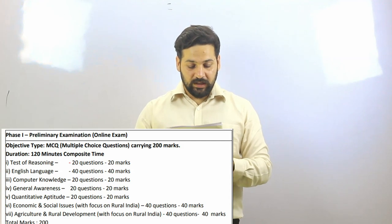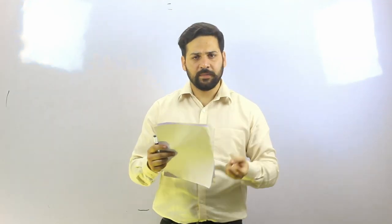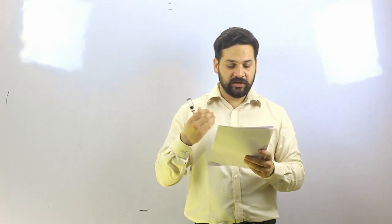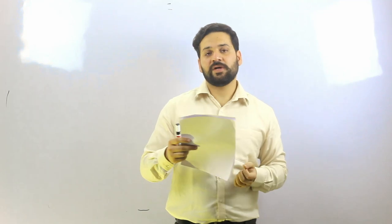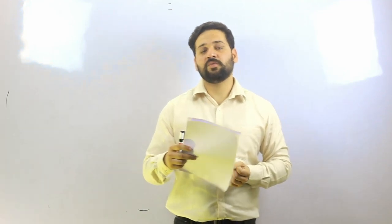There are a total of 7 sections, 200 marks, and 120 minutes. Starting with the test of reasoning, then English, computer awareness, general awareness, quantitative aptitude, ESI — economic and social issues — and agriculture and rural development.